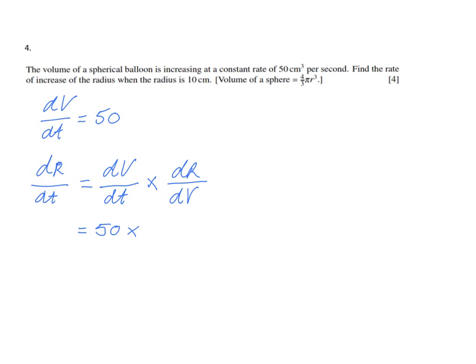The volume of a sphere is 4 over 3 pi r to the power 3. So the derivative of that one, dV/dr, is 3 times 4 over 3, which is 4 pi r squared.